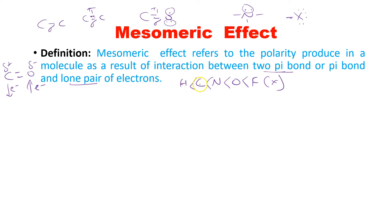Polarity is produced here — carbon has more electropositivity and less electronegativity, while oxygen has the highest electronegativity compared to carbon. The bond is formed due to electrons being shared between carbon and oxygen.